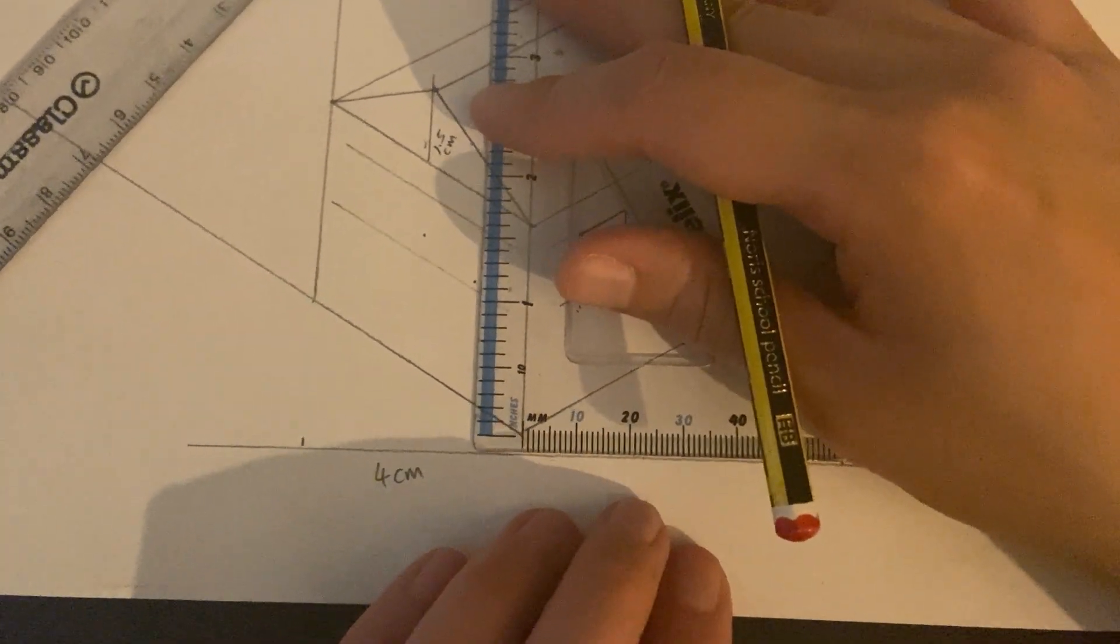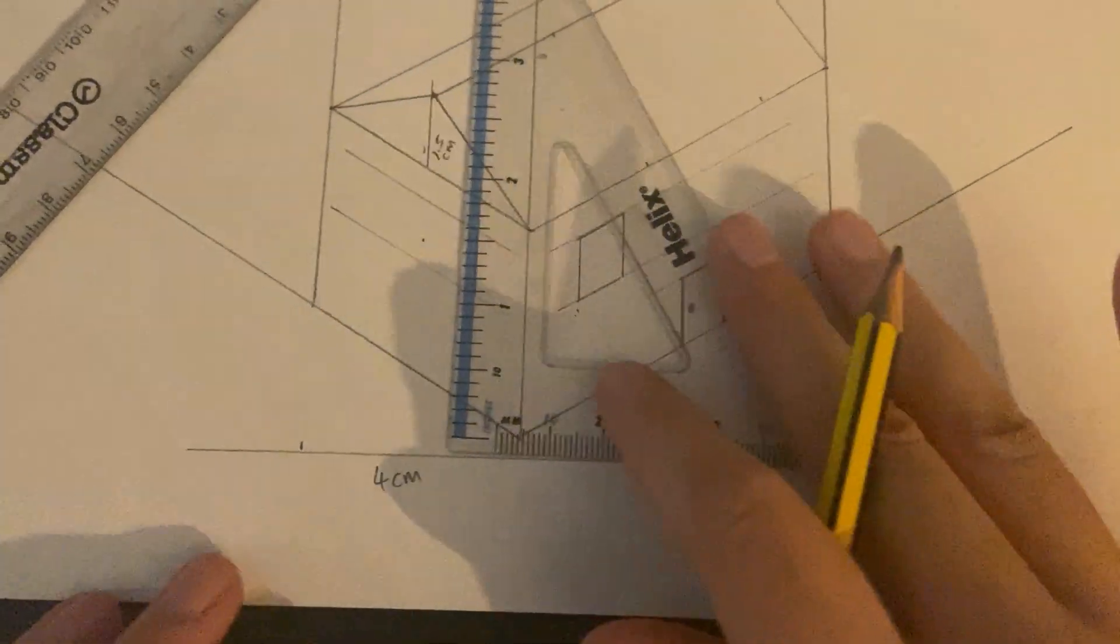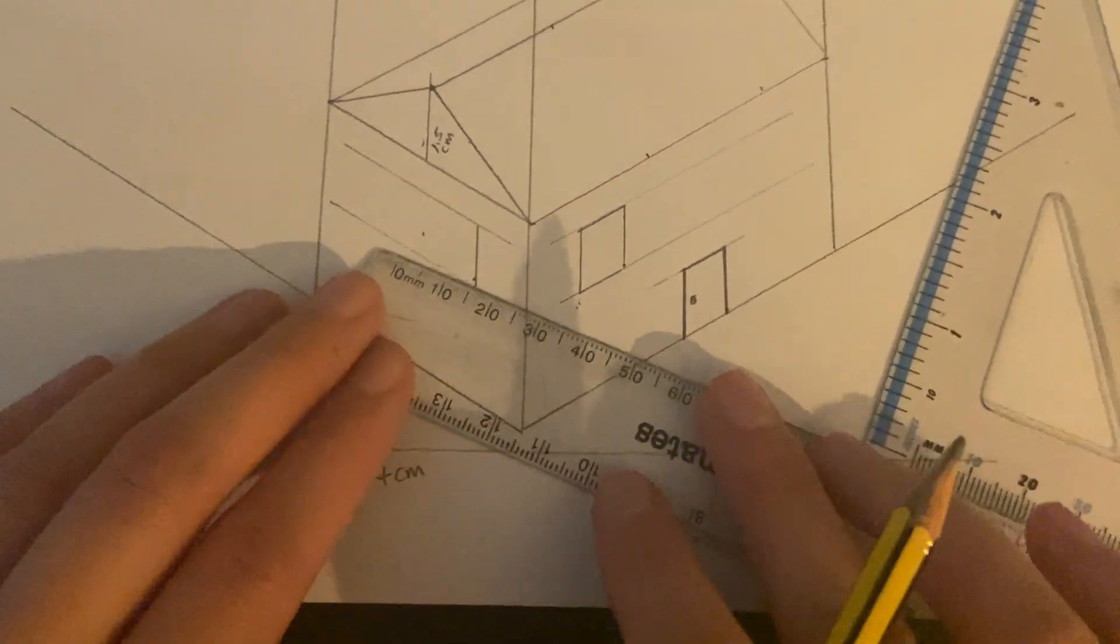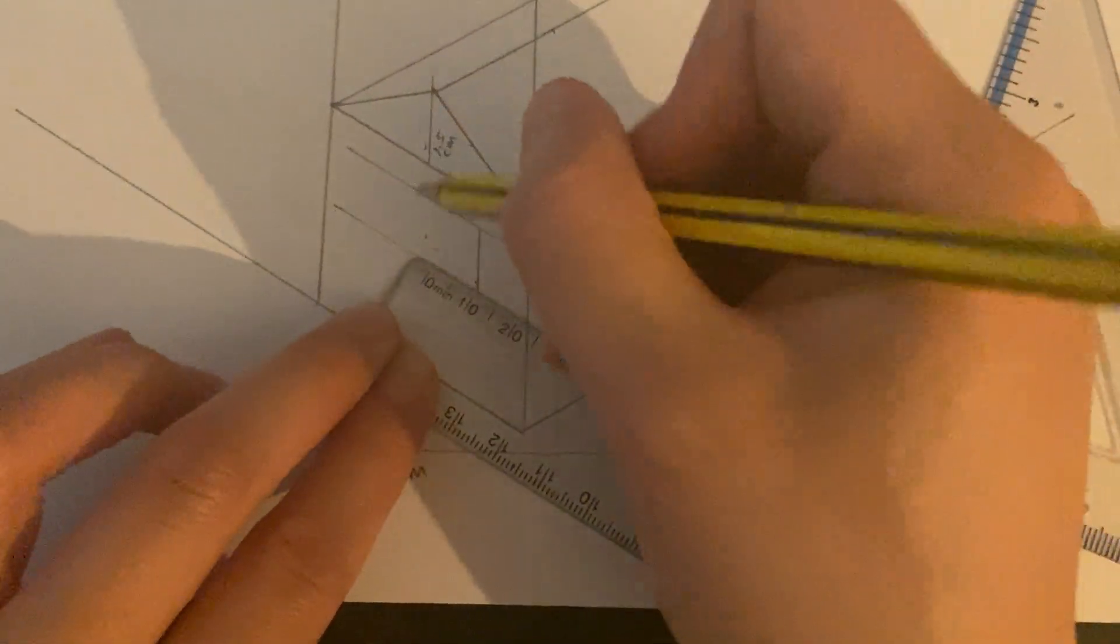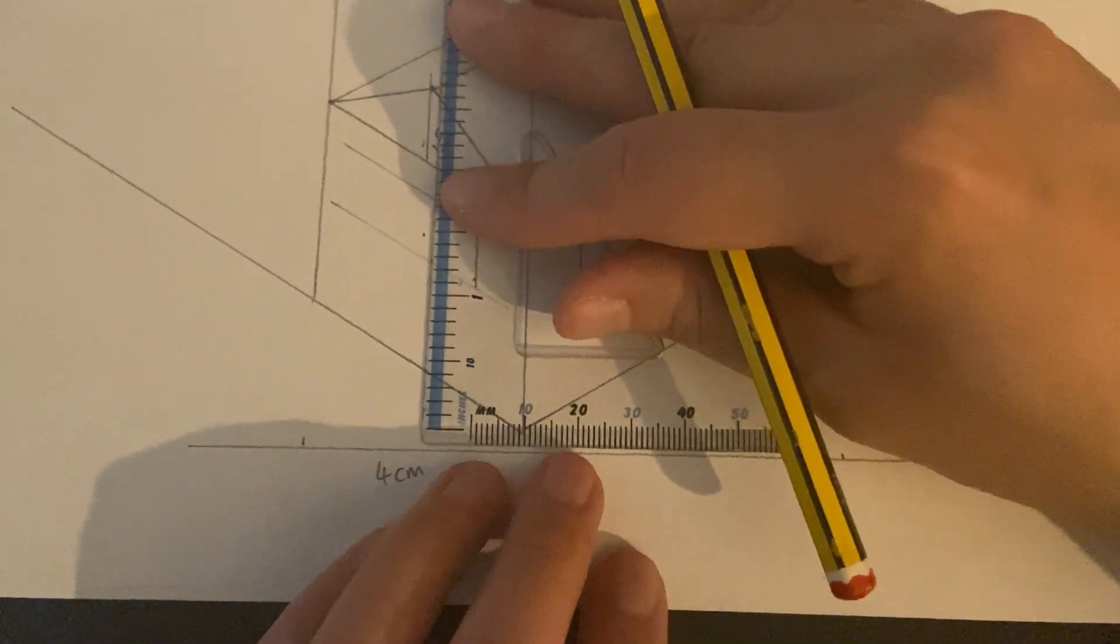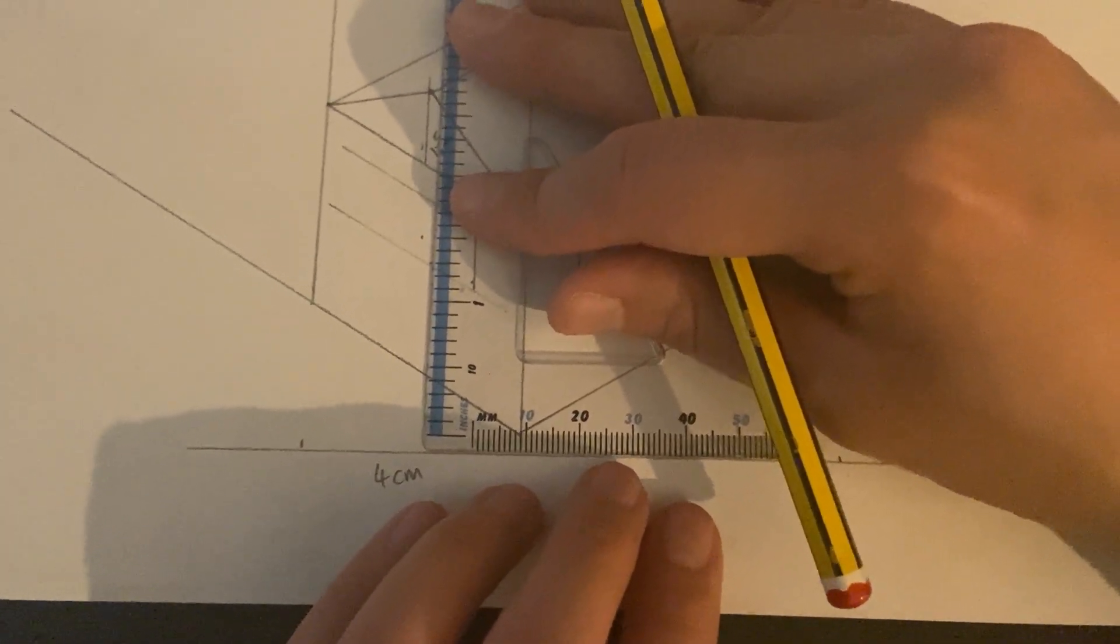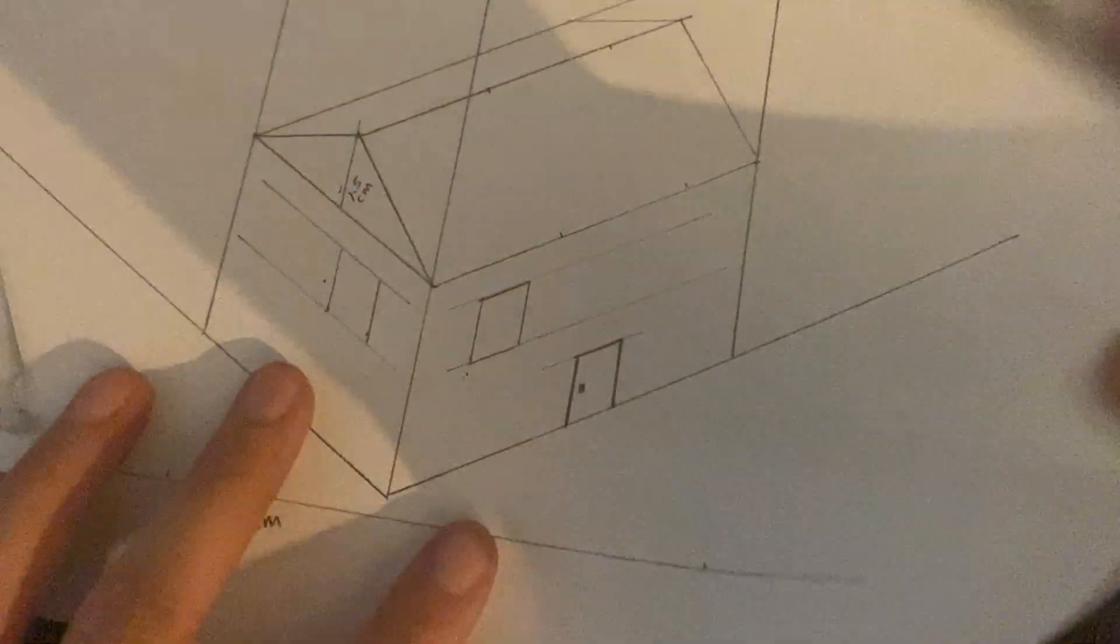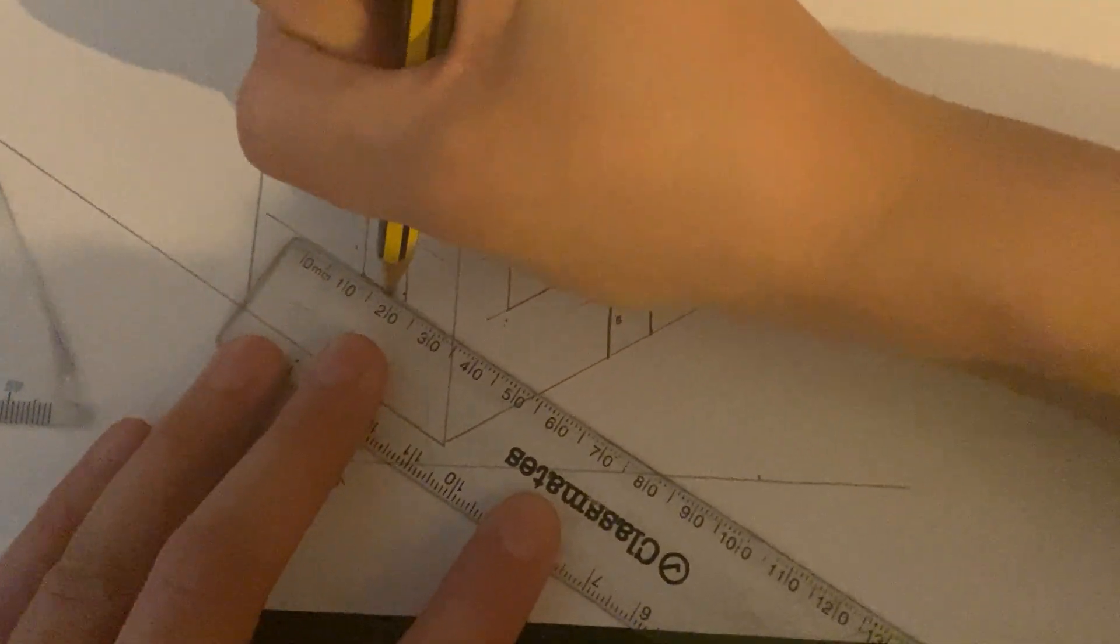And then using your set square leaning against your horizontal line in order to draw a vertical line. And then you measure it again, so we know we want it to be one centimeter wide. So we do a one centimeter wide window, measure it up from that point, and then just make a mark. And using your pencil and lean it against the horizontal line and complete that drawing.